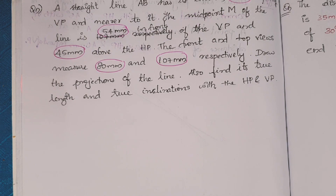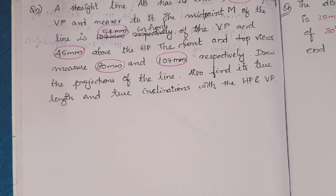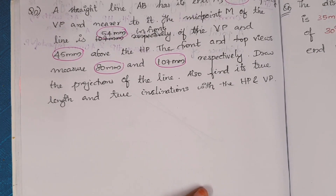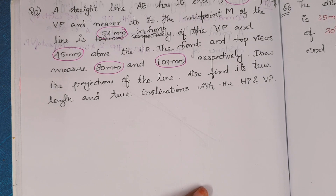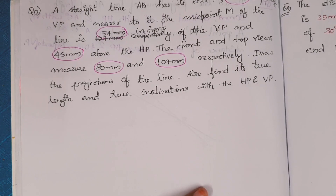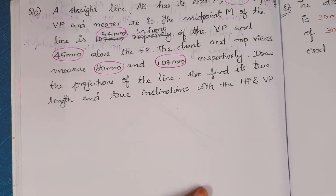A straight line AB has its end A 9 mm in front of VP and nearer to it. The midpoint M of the line is 54 mm in front of VP and 45 mm above the HP. The front and top views measure 80 mm and 107 mm respectively. Draw the projections of the line. Also, find its true length and true inclinations with HP and VP.